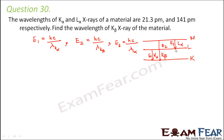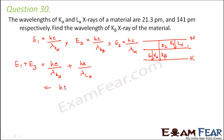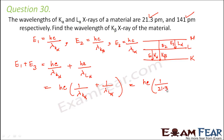We write E1 = hc/λ(K-alpha), E2 = hc/λ(K-beta), and E3 = hc/λ(L-alpha). From the energy level diagram, E1 + E3 = E2. So E1 + E3 = hc × (1/λ(K-alpha) + 1/λ(L-alpha)). Substituting the values in picometers and converting, this equals hc × (1/21.3 + 1/141) × 10¹², which gives hc × 0.0539 × 10¹².